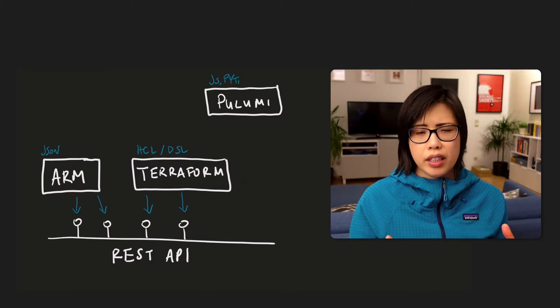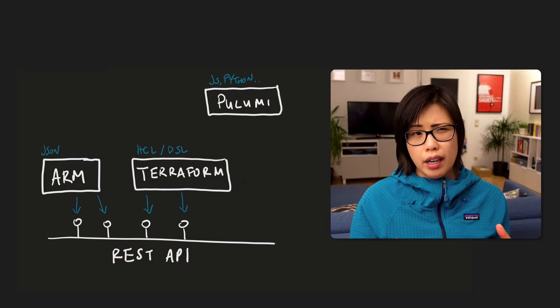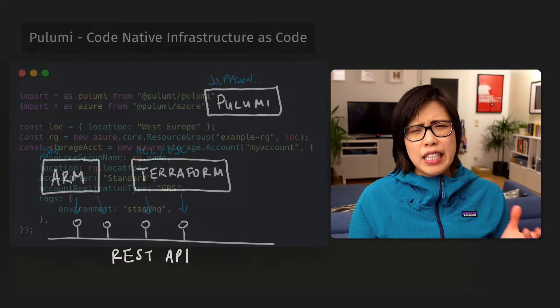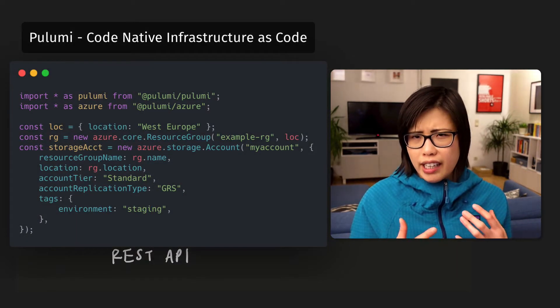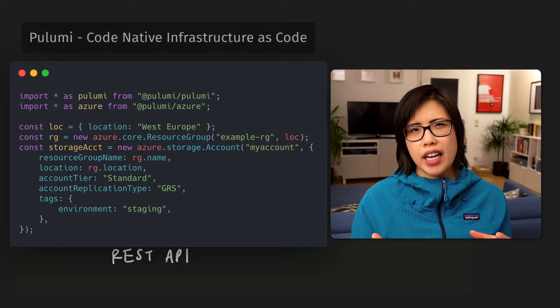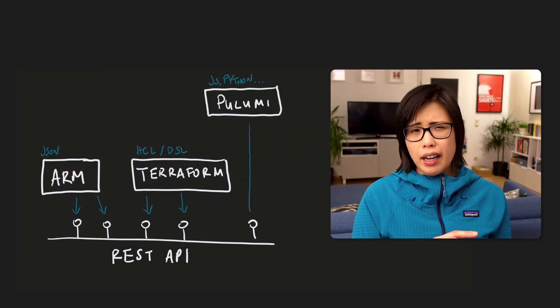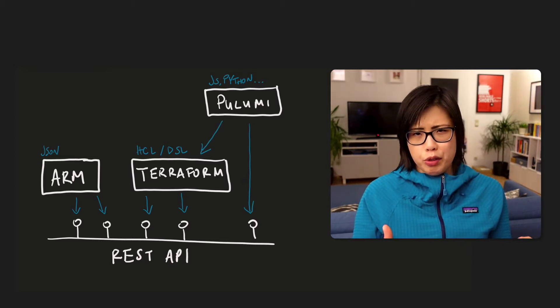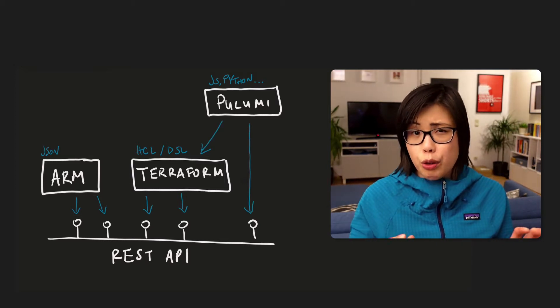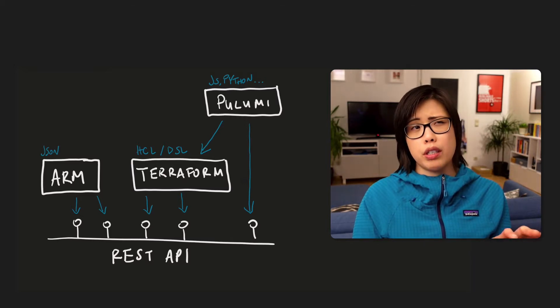So Pulumi lets you write your infrastructure in JavaScript or Python. The interesting thing about Pulumi, from what I can gather, is that it piggybacks on certain technologies like Terraform when it can leverage it. Like why build something from scratch if somebody's already built something great? And it is open source, so it's totally legit to do.